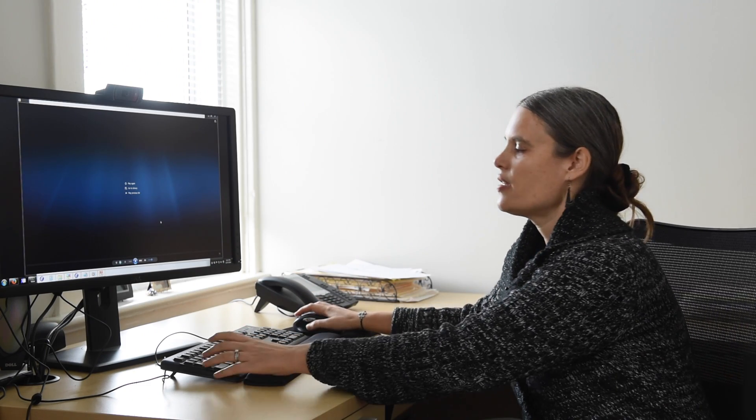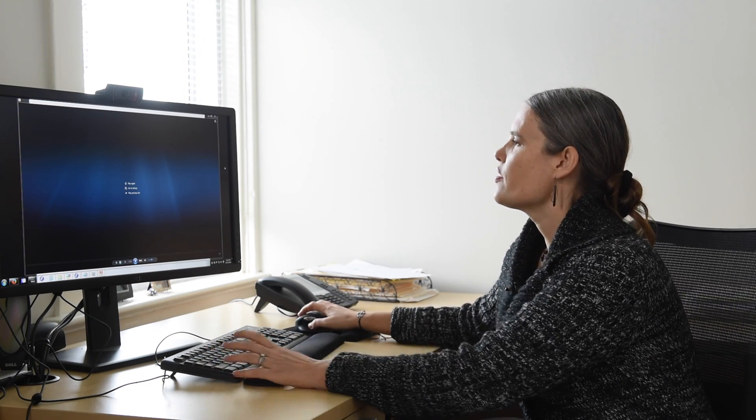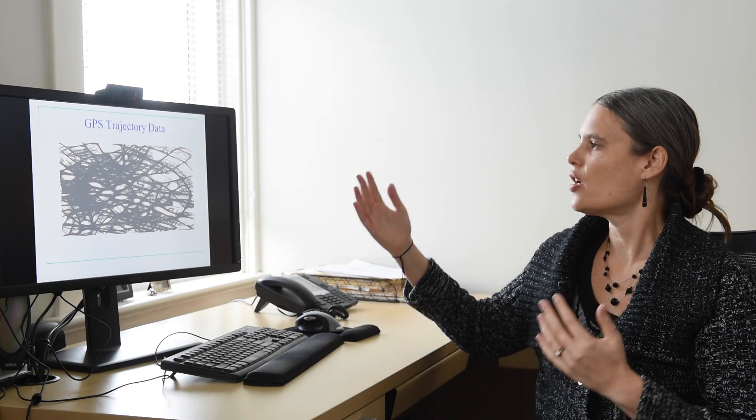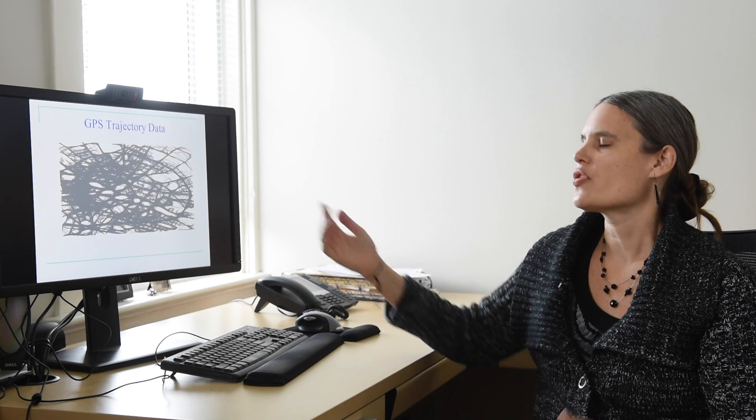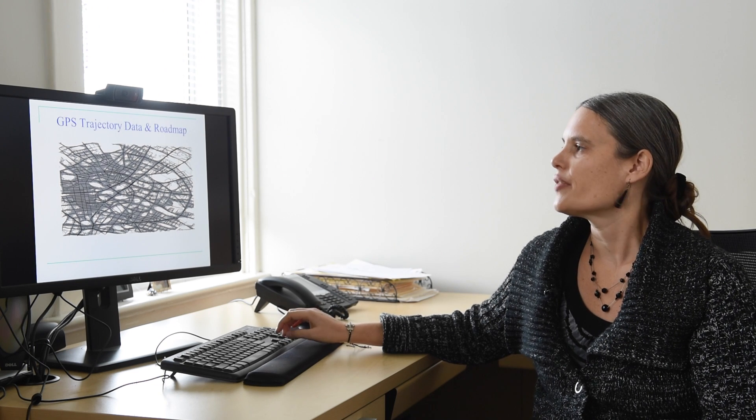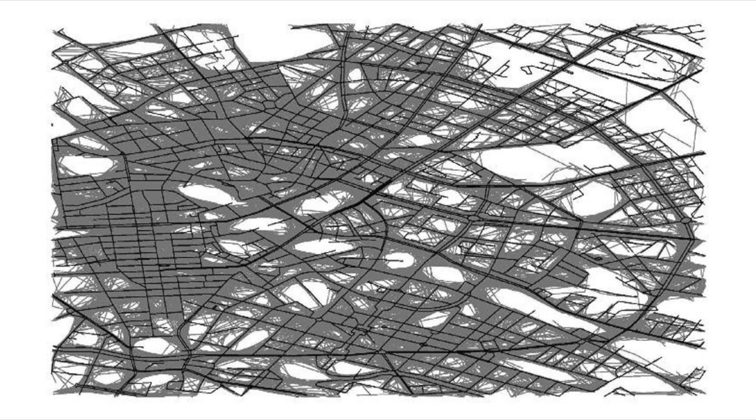Now, instead of having just one or two trajectories, consider 26,000 trajectories — trajectories from cars on a road network. Wouldn't it be nice if we could extract the underlying road network? That's a task called map construction that we work on in my group.